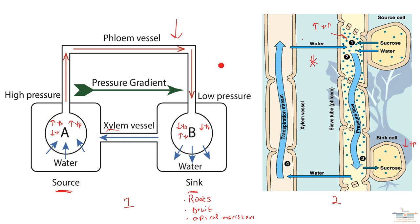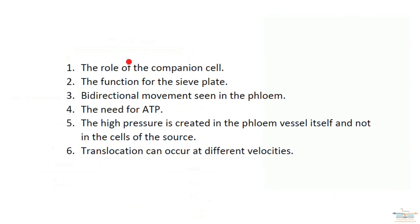And there are several things that are wrong with this hypothesis, things that do not fit with the current understanding of translocation. So this is a list of the problems with the mass flow hypothesis. Number one, there's no role of the companion cell in that current mass flow hypothesis. There's no function of the sieve plate. You've got these sieve plates in the phloem vessel and they look like they're sort of obscuring the movement of the phloem liquid. So there must be some sort of function for them.